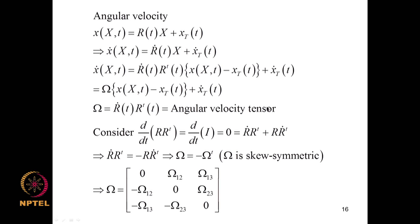The angular velocity tensor is skew-symmetric. To show this, consider D/Dt(RR^T) = 0 since RR^T is the identity matrix. This gives Ṙ R^T + R Ṙ^T = 0, from which Ω = −Ω^T, confirming Ω is skew-symmetric.